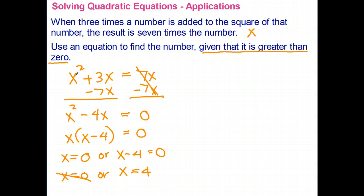Three times four is twelve, added to the square of the number, which is sixteen, gives me a total of twenty-eight. The result is seven times the number, which is also twenty-eight. So it does check, and the answer is X equals four.